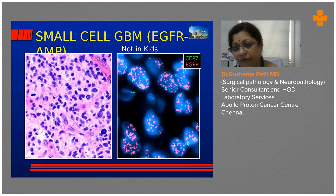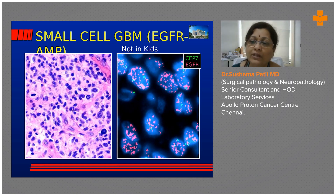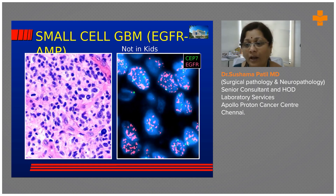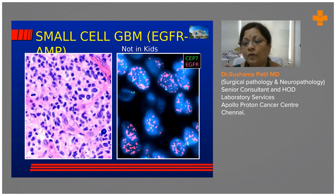Anaplastic oligodendrogliomas should have 1p19q codeletion — I'll come to that later. But remember that in small cell glioblastoma, about 80% show EGFR amplification. All the red you are seeing in every cell against a blue background represents amplified EGFR signal. When we do FISH, we always carry a reference probe — CEP, which stands for centromere enumerating probe.